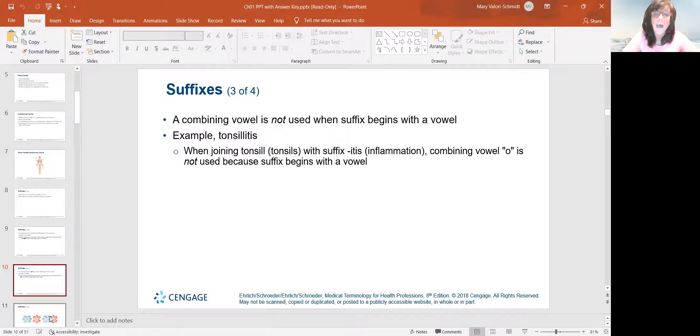A combining vowel is not used when the suffix begins with a vowel. So tonsillitis. When you're joining the tonsils, tonsil, with the suffix itis, which is inflammation of, you don't need that O because then it would be tonsilloitis, which sounds really strange.